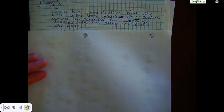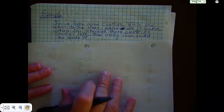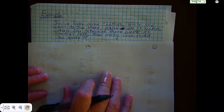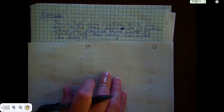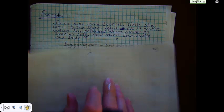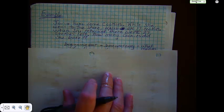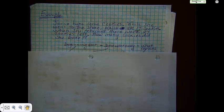Joni bakes some cookies. While she went to the store, Caleb ate 17 cookies. When she returned, there were 27 cookies left. How many cookies did she bake? So she baked a certain amount. Some of them went away, which of course, Caleb ate them. And then we know what remains. Remains 27 cookies.